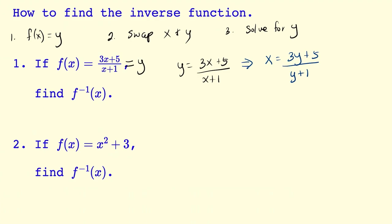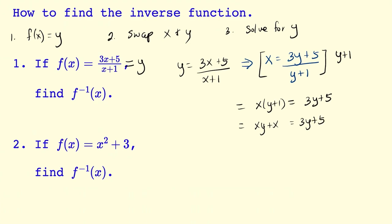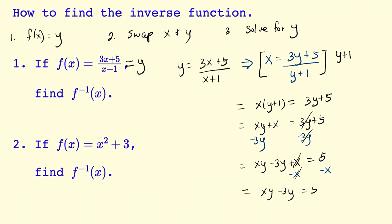Do this by multiplying the entire function by y plus 1. And we get x times y plus 1 is equal to 3y plus 5. This becomes xy plus x is equal to 3y plus 5. And we want y on one side, so we're going to subtract 3y on both sides, and we get xy minus 3y plus x is equal to 5.